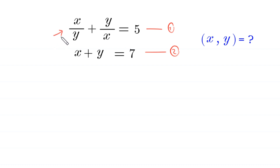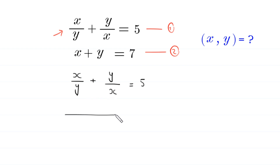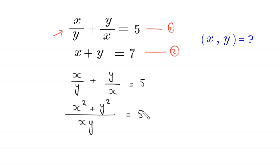We take Equation 1: x over y plus y over x equals 5. We find the LCM of y and x, which is xy. Multiplying through: x squared plus y squared over xy equals 5. Multiplying both sides by xy gives us x squared plus y squared equals 5xy.